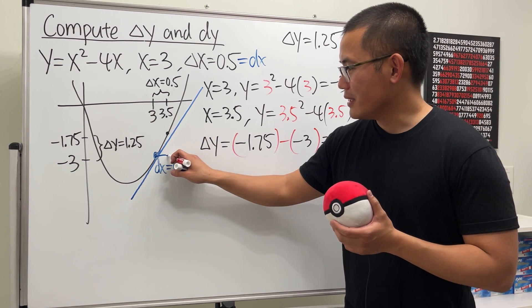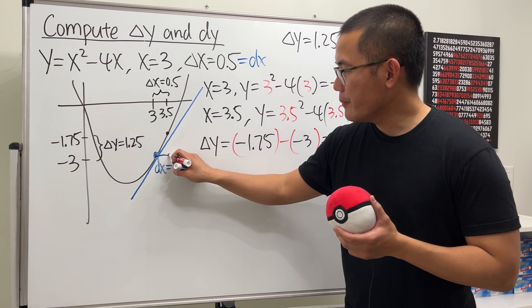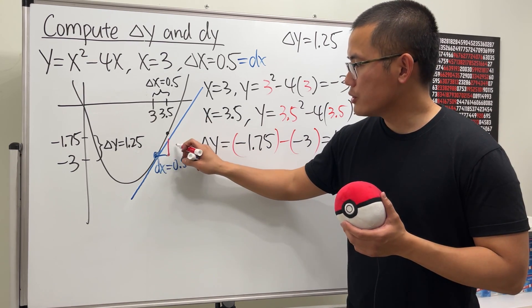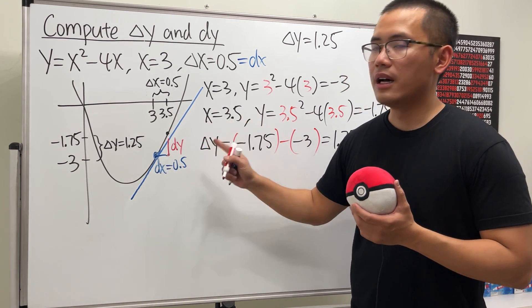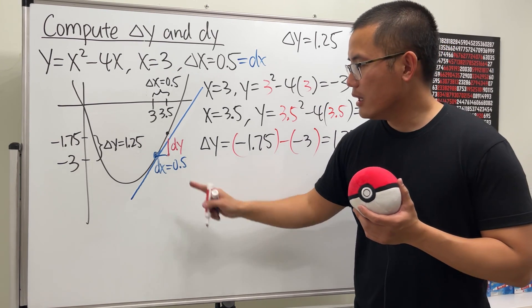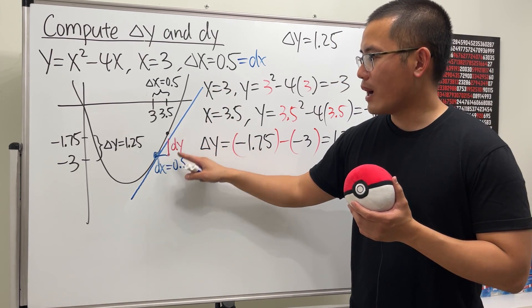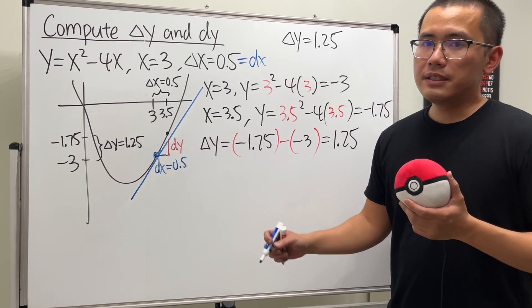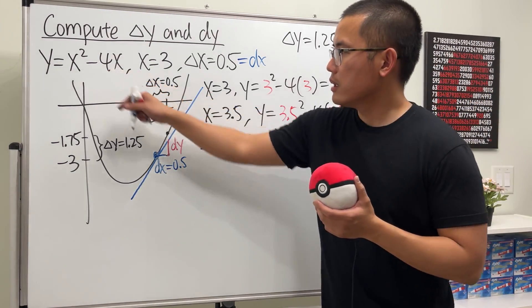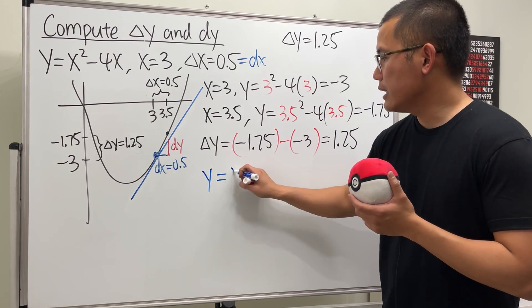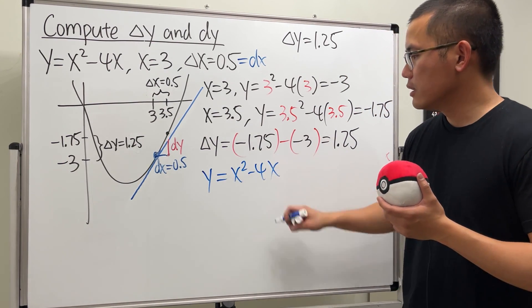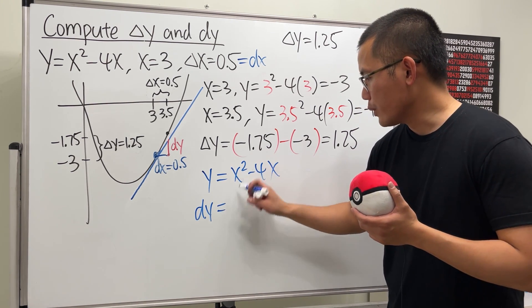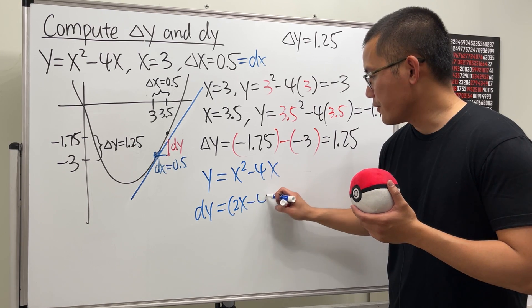You can see dx is the same as delta x, and the reason is because you can just move the same amount of distance, 0.5 units. This right here is the same as dx. From here, what we are going to do is when we go from here up to the tangent line, this much distance is precisely the dy. The slope of this tangent line is just dy/dx.